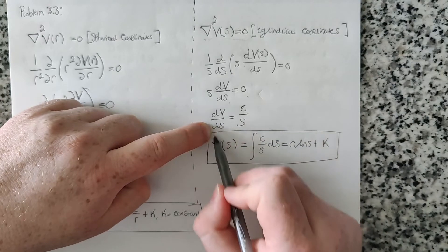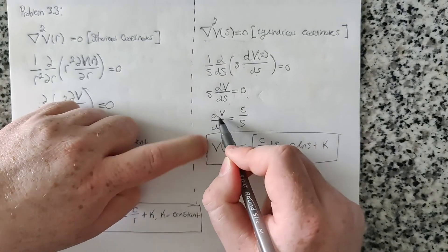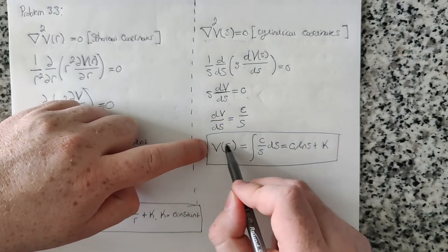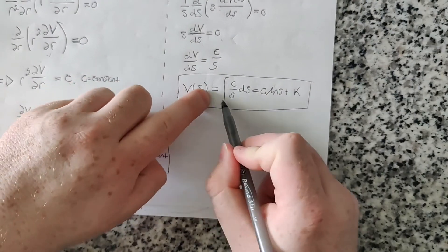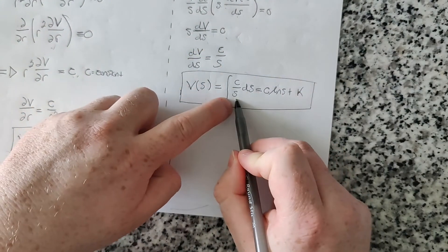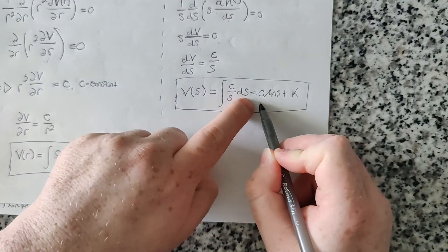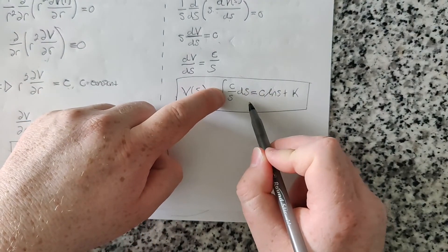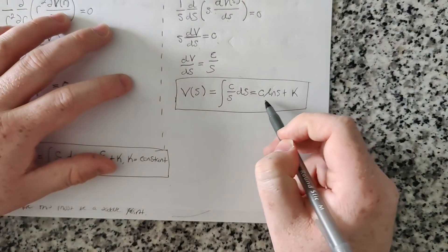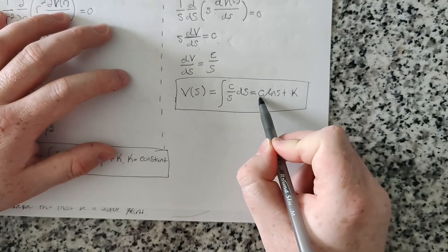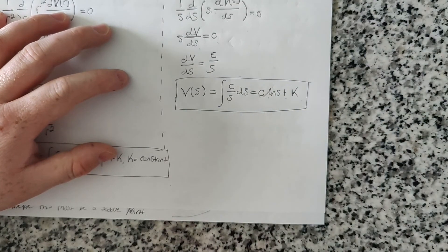And so doing the same sort of thing, multiply by dS and integrate. So the integral of dV is just V. So our potential as a function of S is equal to the integral of C over S, dS. And the integral, C is a constant, so that's really just the integral of one over S, which is the natural log of S. So it's just the natural log of S times C plus another integration constant, K.